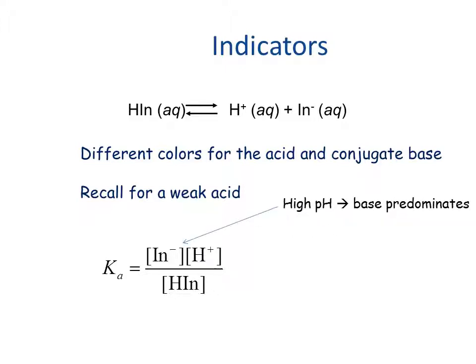If the pH is high, then what we see is that the H+ concentration is low. So in order for the value of Ka to be maintained, the base form, In- concentration, must be much higher than the acid form concentration. So the base form is what we see.